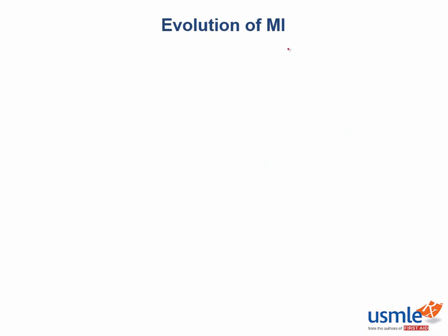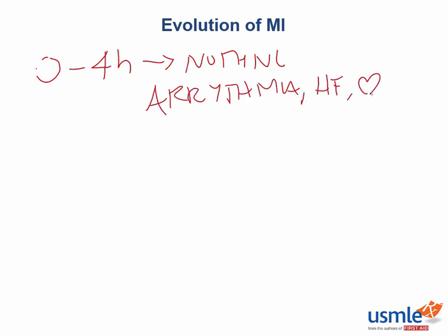Let's examine what is going on at a histopathologic level. In the first zero to four hours, we see no gross or microscopic changes, but there is still a risk of arrhythmia, heart failure, and cardiogenic shock. Why do we see nothing but still have all these risks? It takes a while for there to be sufficient leak of intracellular enzymes and activation of other enzymes within the cells before we can actually see the cellular damage.